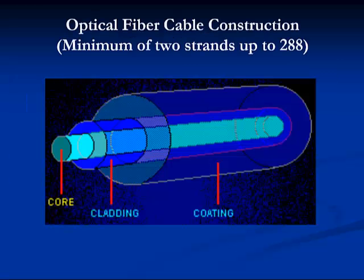This slide shows how optical fiber is constructed. The core is the central region through which light is transmitted, considered an optical waveguide. The cladding is the material surrounding the core and must have a lower index of refraction to keep the light in the core. The coating is a flexible PVC-type material applied during the draw process to protect the fiber from the environment and handling.